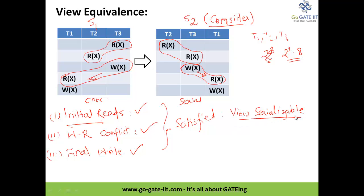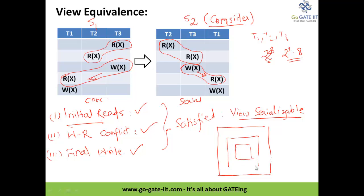This is a view serializable schedule. One more worth-noting point is this diagram, which is very useful from an exam point of view. The outer block denotes view serializable schedules, the inner block denotes conflict serializable schedules, and the outermost represents all schedules. From this Venn diagram, you can directly say that any conflict serializable schedule is a view serializable schedule, but any view serializable schedule is not necessarily a conflict serializable schedule.